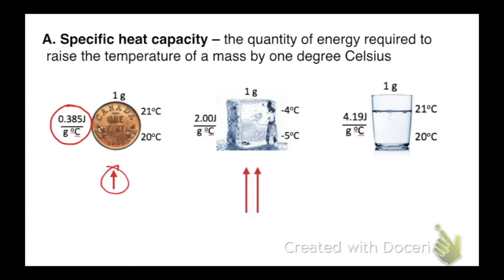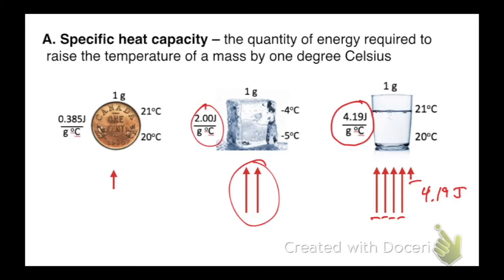Now let's look at the substance of water. Water's specific heat capacity is 4.19. So I have four arrows there and a little bit. So 4.19 joules. That's actually a big number. Four doesn't seem like a big number. But when you compare it to this one, which is two, or this one, which is 0.385, it's a big number. And that has some meaning here. So watch this.